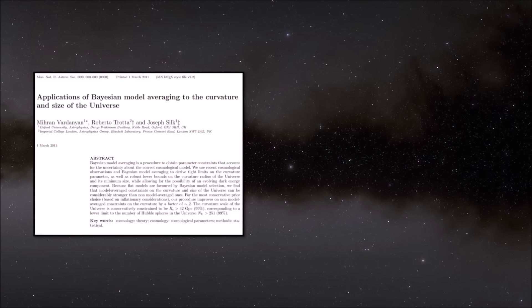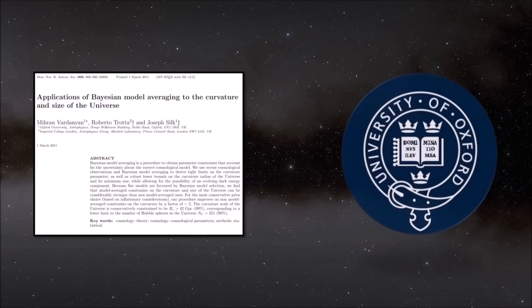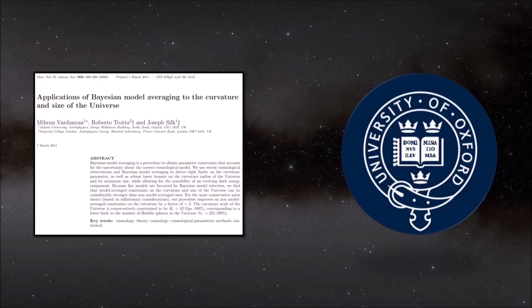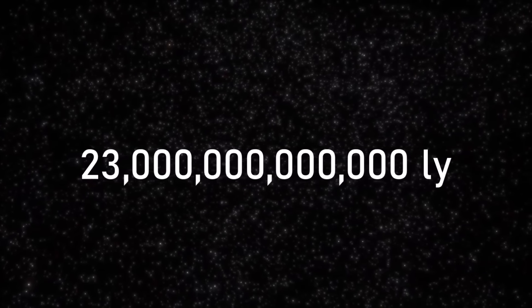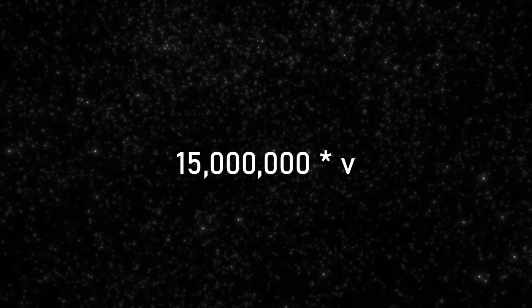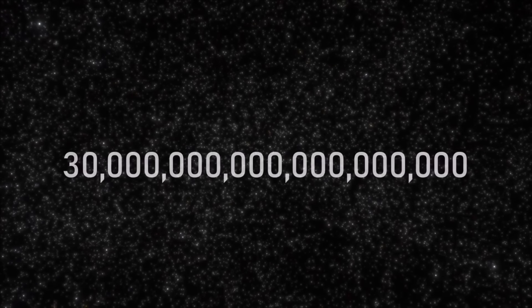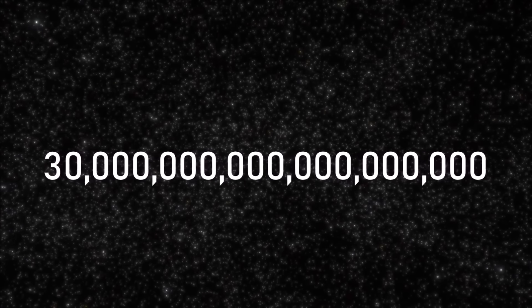Skipping intricate mathematics and science details, the prevailing estimate, crafted by physicists at Oxford University, suggests the universe's total area must be a minimum of 250 times the radius of the observable universe. This implies a universe diameter exceeding 23 trillion light years, making our observable universe, spanning 93 billion light years, a mere 1/15 millionth of its overall expanse. If our observable universe harbors 2 trillion galaxies, the unobservable universe could potentially contain as many as 30 quintillion galaxies, while the exact size of the total universe might remain elusive.